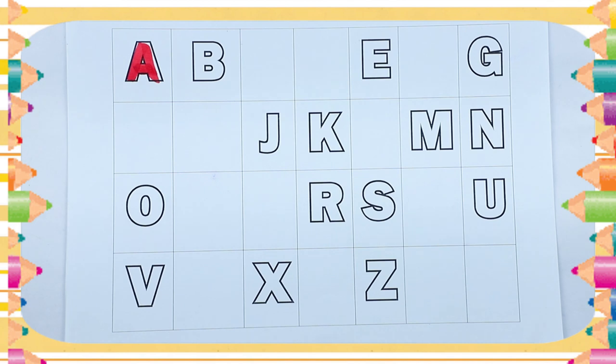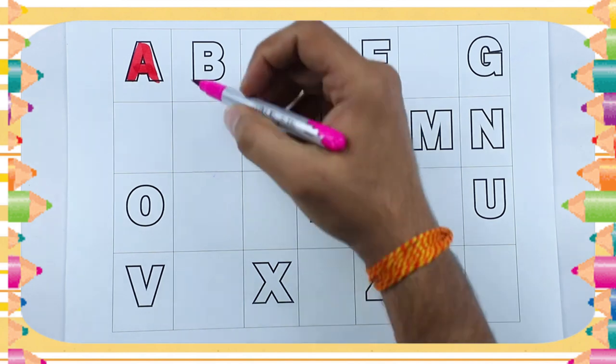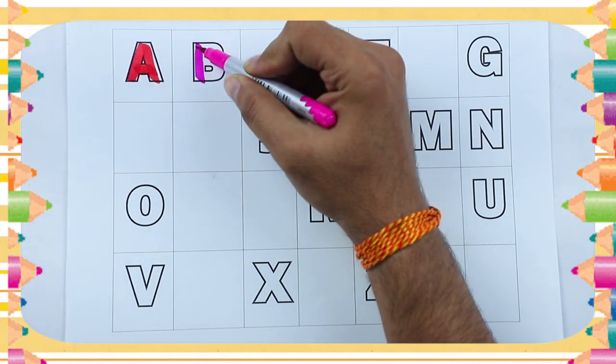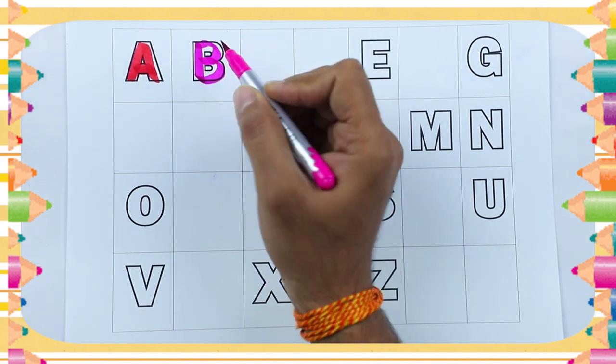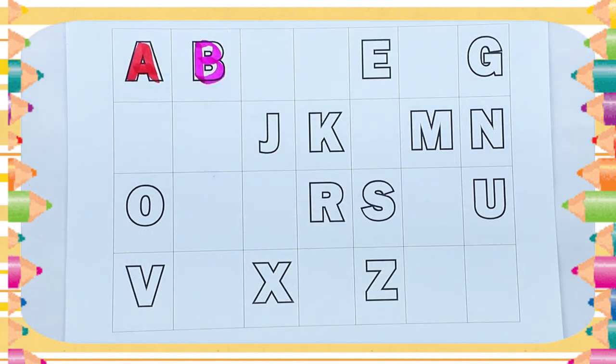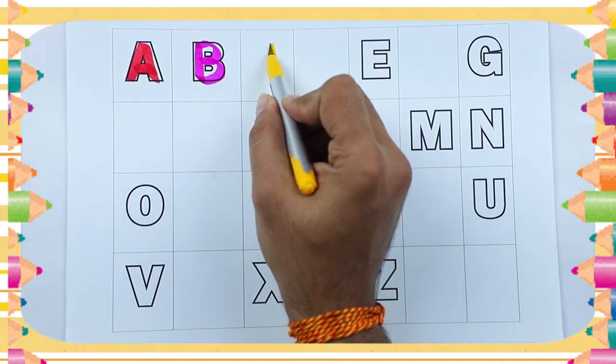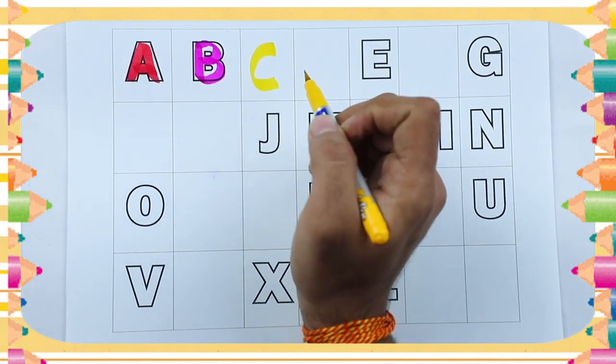What next? Next is B. Pink color, B. B for ball. What next? Tell me. Next is C. C for cat.